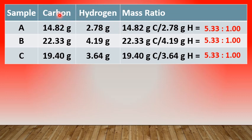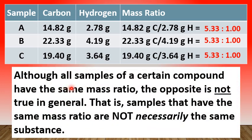Before we proceed to question number 2, let's refer back to the samples of isooctane — samples A, B, and C. It is worth emphasizing that although all samples of a particular compound have the same mass ratio, the converse is not true in general. For example, there are many compounds other than isooctane that also have a carbon to hydrogen mass ratio of 5.33 to 1.00.